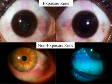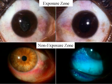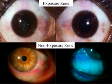Therefore, rose bengal staining in conjunctival chalasis-induced dry eye tends to distribute at the lid margin, the conjunctiva adjacent to the lid margin, or below the lid margin in the non-exposure zone. This non-exposure zone staining is typical of conjunctival chalasis-induced dry eye, which is very different from the exposure zone staining pattern distributed between the lid fissure or interpalpebral zone commonly observed in aqueous tear deficiency dry eye.